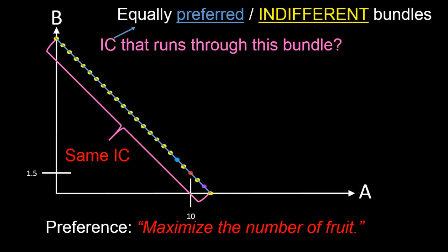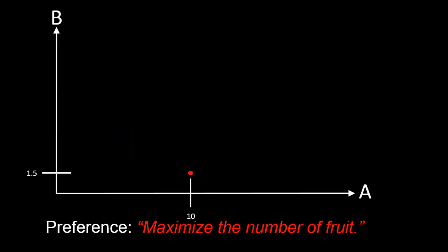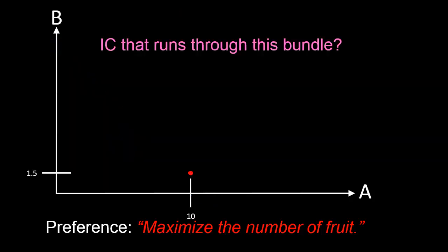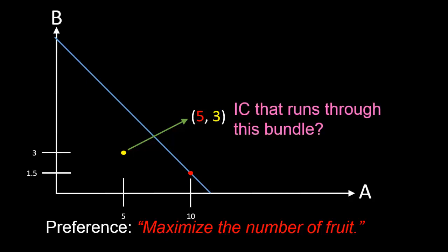That is to say, Chris is indifferent between any two bundles on this indifference curve. So what we did was to start with the red bundle and ask: what does the indifference curve running through this bundle look like? We then proceeded to construct just such an indifference curve. Let's now look at one more example of how an indifference curve is constructed. Let's pick any point at random — say the yellow bundle here. This is the bundle 5 apples and 3 bananas. Again, we can ask: what does the indifference curve that runs through this bundle look like?